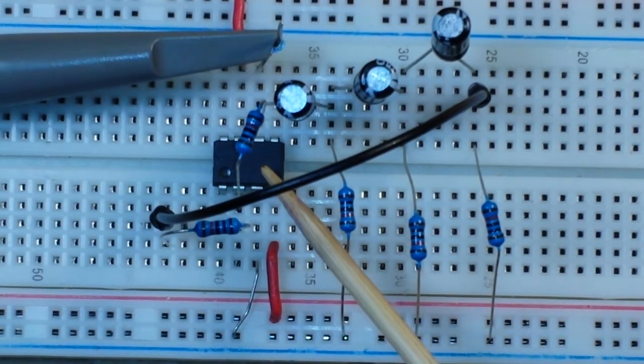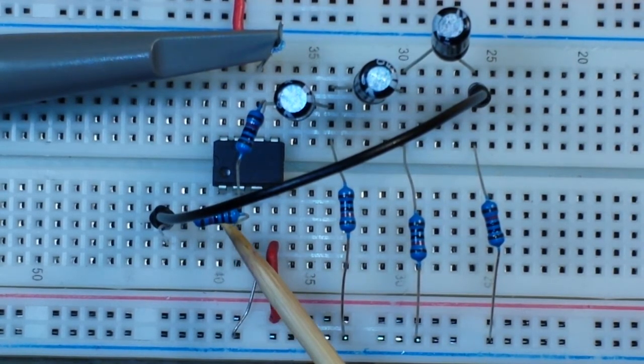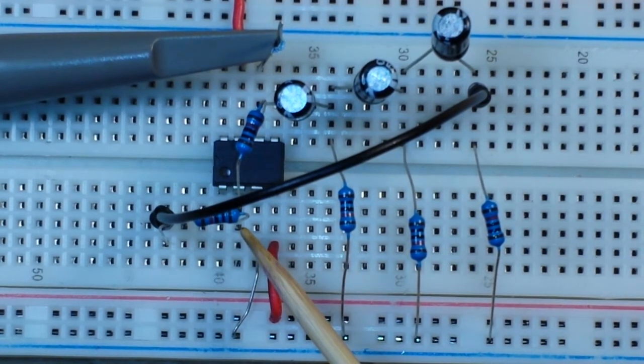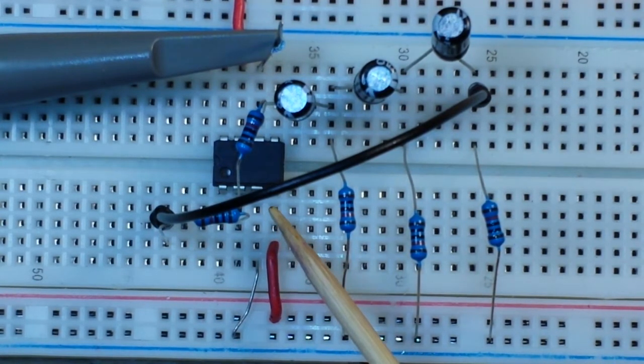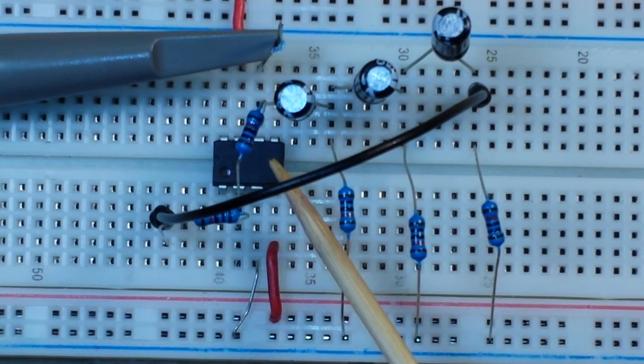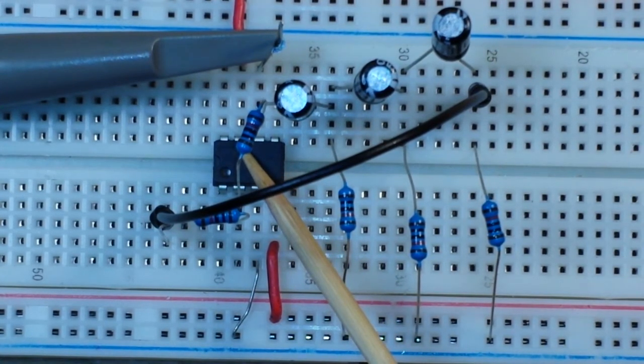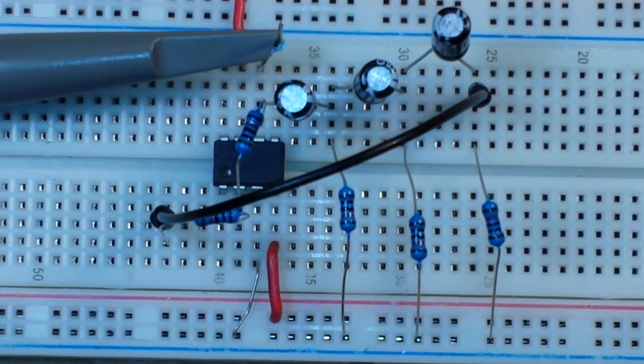Okay so here's our op amp. This is pin one over here and it's an offset null. Pin two is our inverting input, pin three non-inverting, pin four is negative vcc, pin five is offset null, pin six is output, pin seven is positive vcc, and pin eight is not connected. So pretty simple to see what we got going on here.